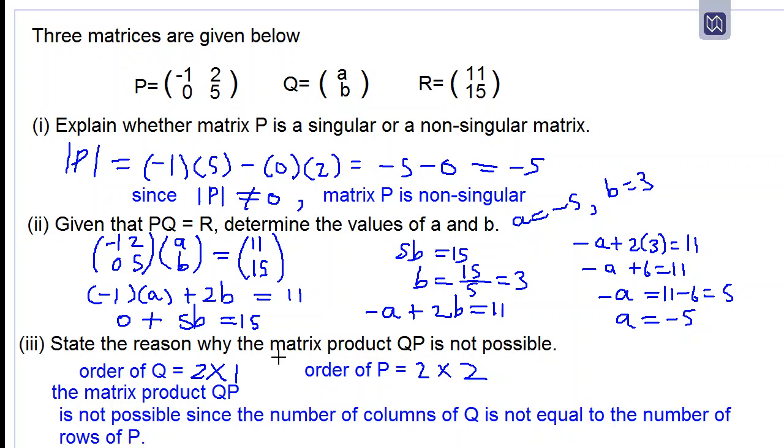So in order for Q and P to be conformable for multiplication, the number of columns of Q must be equal to the number of rows of P. These two numbers on the inside must be equal and because they are not equal to each other, it is not possible to find the matrix product QP.